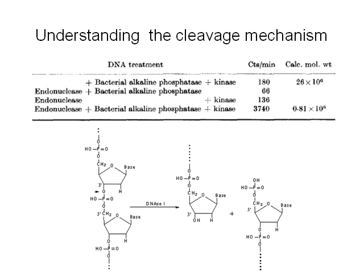The researchers then wanted to find the details of the cleavage reaction with a series of reactions with phage DNA. They first digested with the endonuclease fraction, then treated with phosphatase to release all 5' nucleotide ends, after which they treated with kinase to add P32 to all the free 5' ends. They recorded counts of P32 label on the treated DNA and found about 32 times more label than on undigested DNA. From this, and knowing the structure of DNA, they could conclude that the enzyme created a 3' hydroxyl, 5' phosphoryl cleavage.